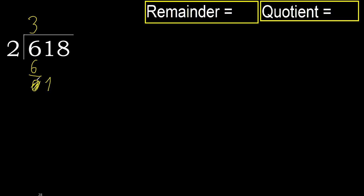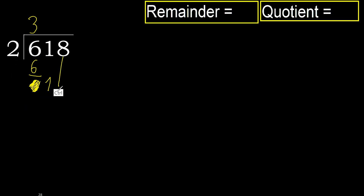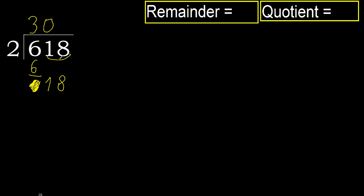Next, bring down. Eliminate the 0 here. 1 is less than 2, therefore take the next 2 numbers. Complete with 0 always, because here we have 2 numbers.